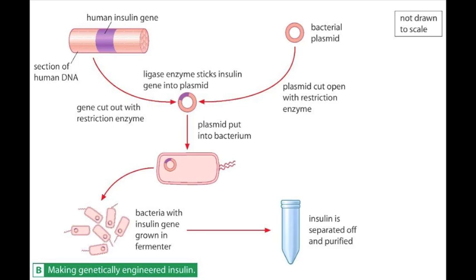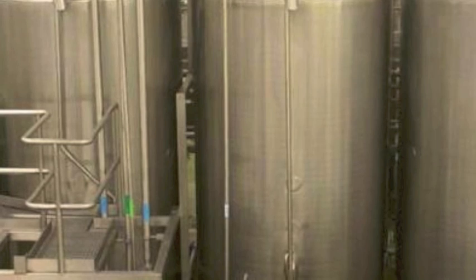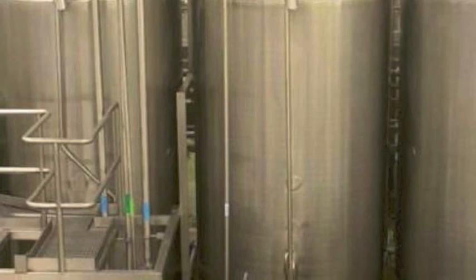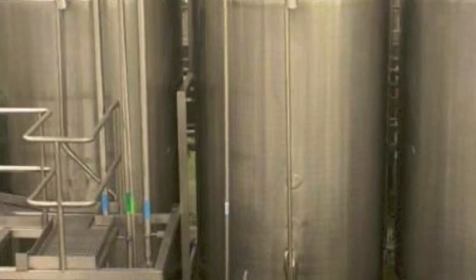When bacterial cells multiply, the genes which have been transferred into them also multiply. Bacterial cells multiply very rapidly and large numbers of cells soon build up. In the case of bacterial cells genetically engineered to contain the human insulin genes, this means large amounts of insulin can be made very quickly. The conditions inside huge fermenters encourage the rapid multiplication of bacteria.